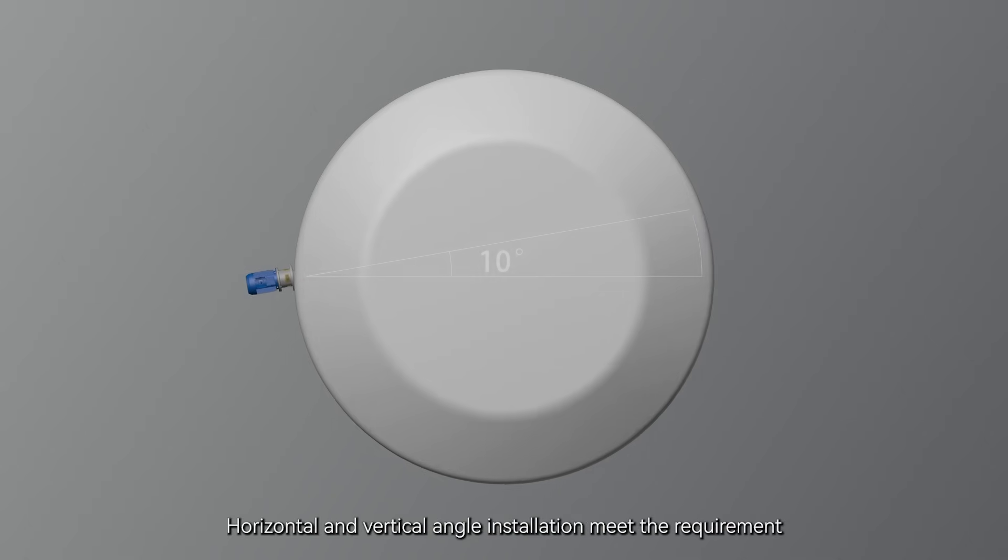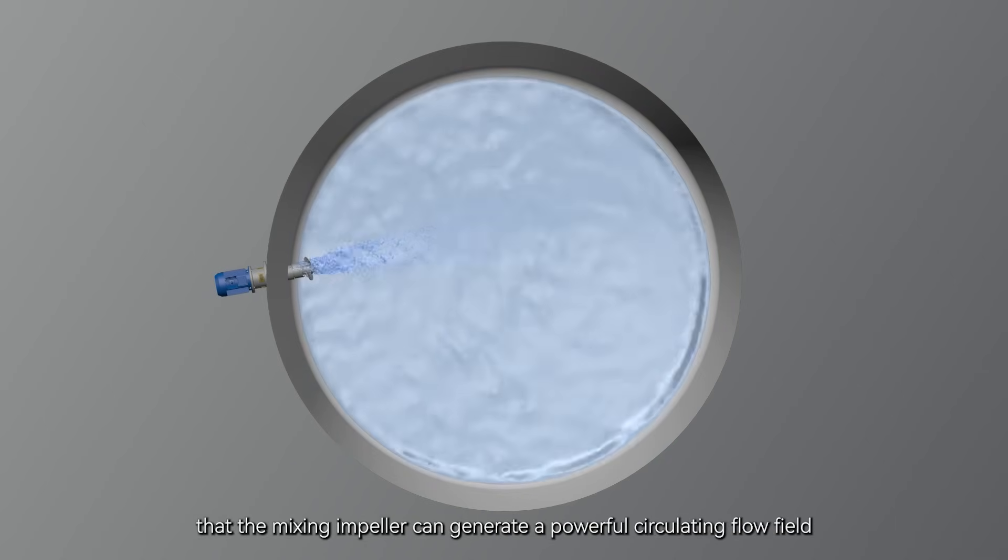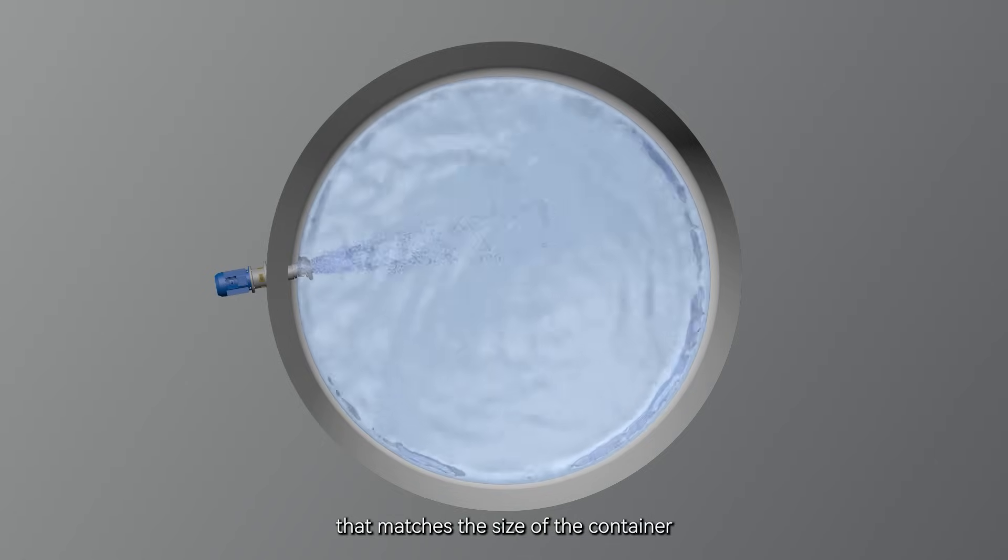Horizontal and vertical angle installation meet the requirement that the mixing impeller can generate a powerful circulating flow field that matches the size of the container, mixing the liquid evenly.